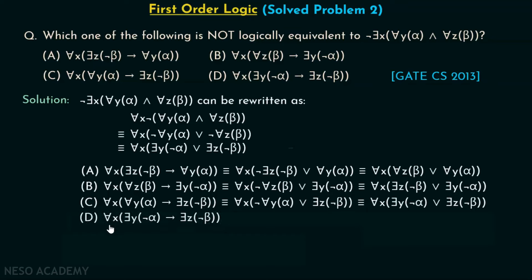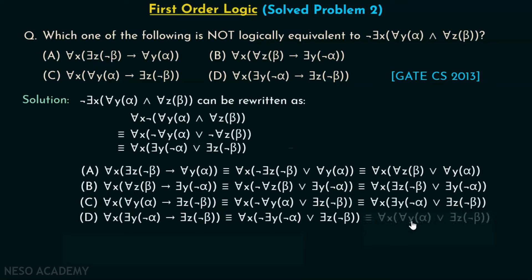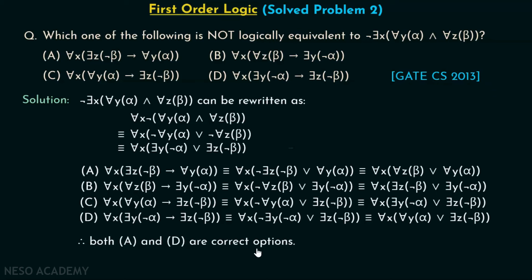Option D: for all x, there exists y, not alpha implies there exists z, not beta. Rewriting the implication gives: for all x, not of there exists y, not alpha, or there exists z, not beta. Moving the negation right gives: for all y alpha, or there exists z, not beta. You can see this expression is also not equivalent to the target expression. So both option A and option D are the correct answers — they are not equivalent to the given expression.